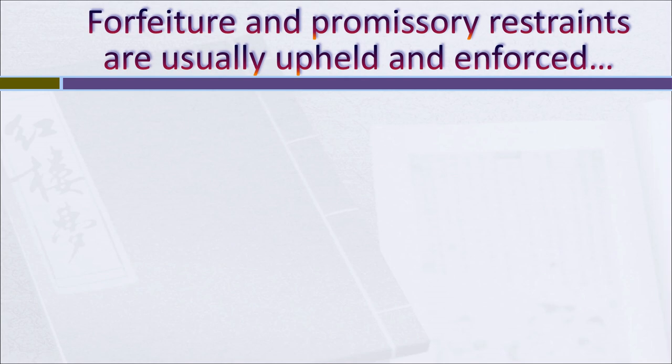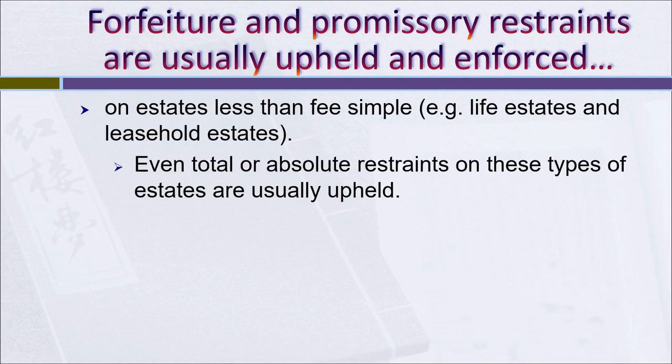Forfeiture and promissory restraints are usually upheld on estates less than a fee simple, such as life estates and leasehold estates. Even total or absolute restraints on these types of estates are usually upheld. For example, if you're a tenant with a leasehold estate and your lease says you can't assign or sublet without the landlord's consent, courts will almost certainly uphold that, even though it is a total restraint, because the estate is less than a fee simple.